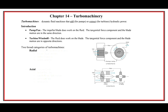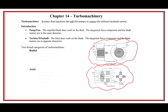Within these categories we can also define the radial direction, typified by this impeller here, and then the axial direction. In the radial direction the flow is perpendicular - it's coming out that way - compared to the axis which is along that way.